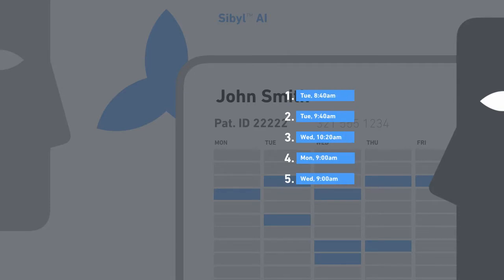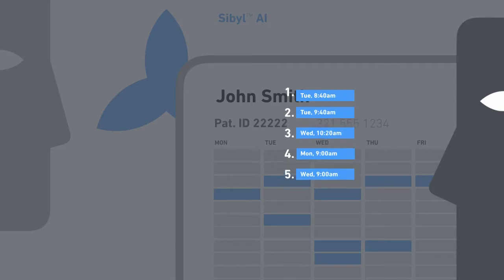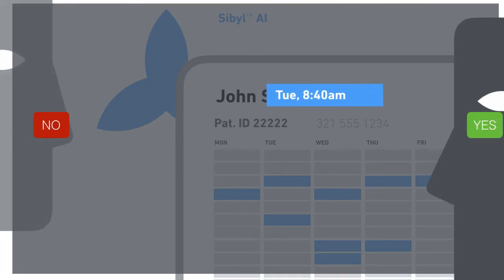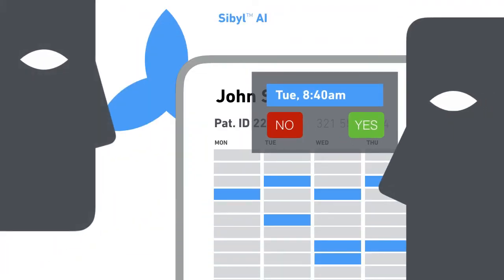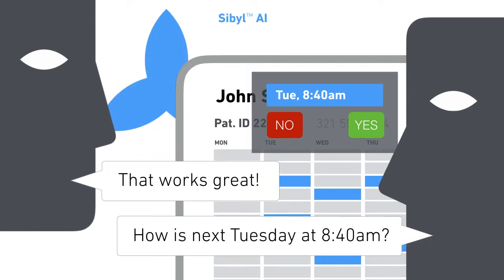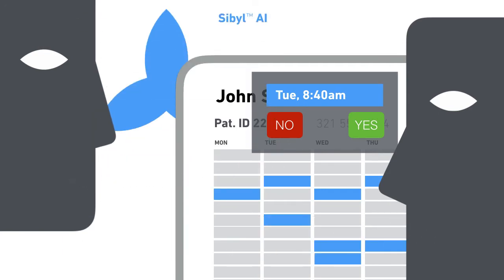The scheduler sees these best fit appointments in ranked order. When Sybil optimizes the schedule, it is fitting together appointments to increase utilization and to reduce empty slots. Overbooking becomes a precision tactic to fill targeted, high-probability gaps.